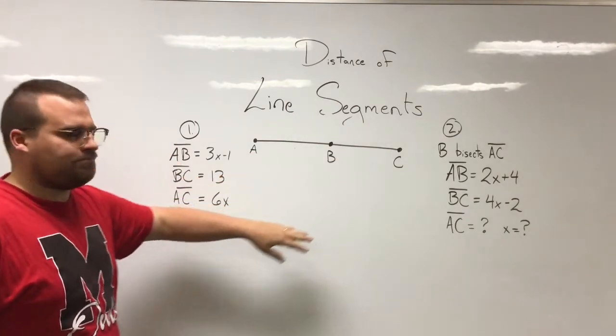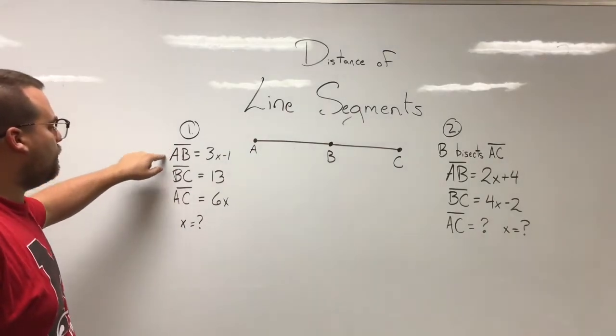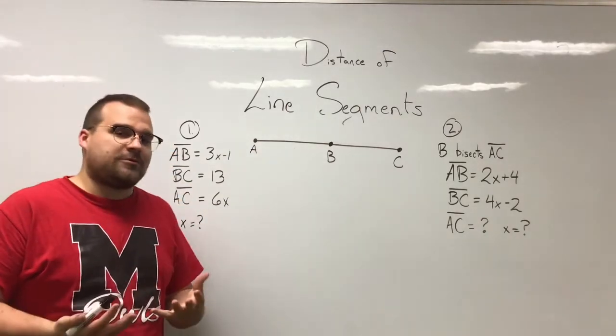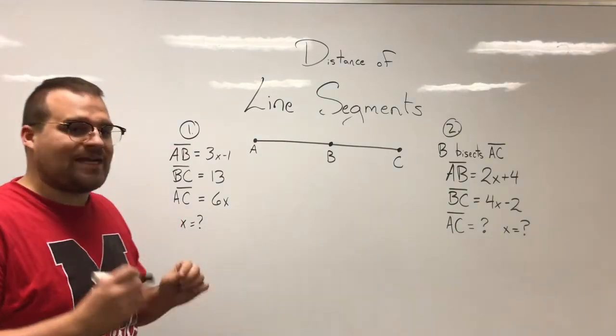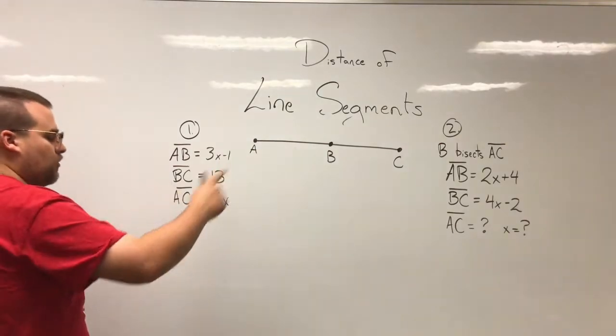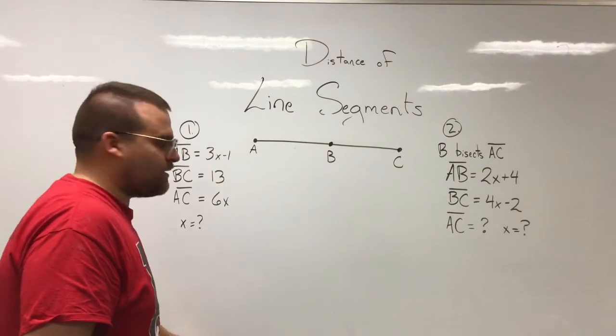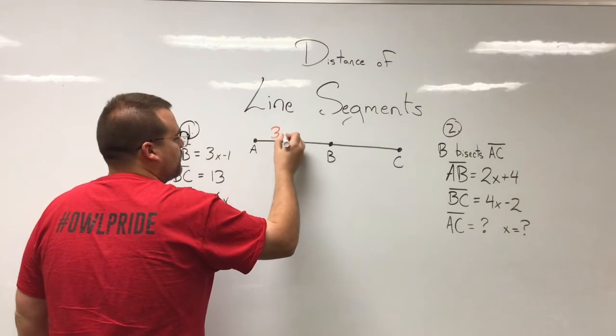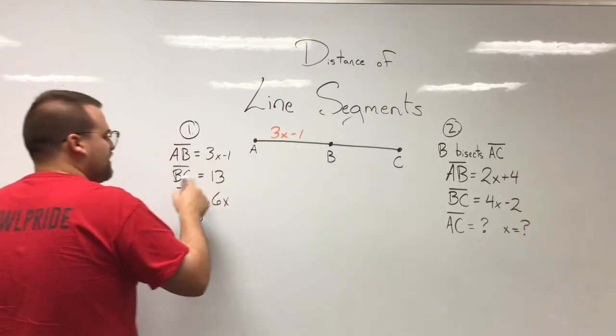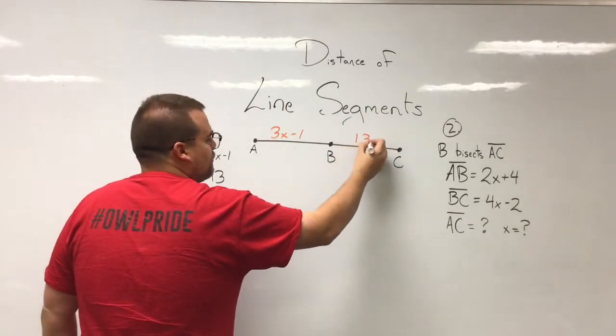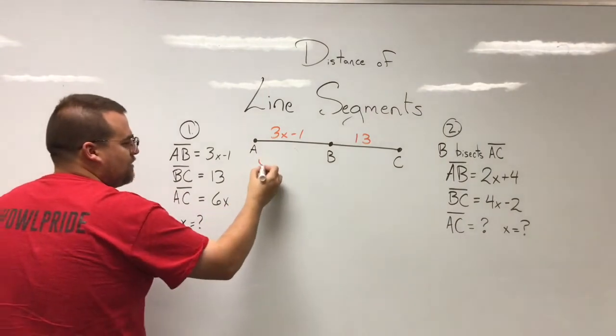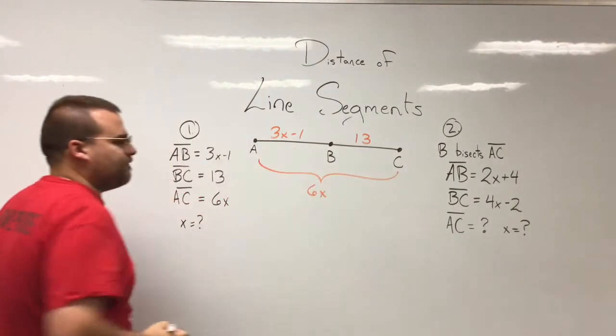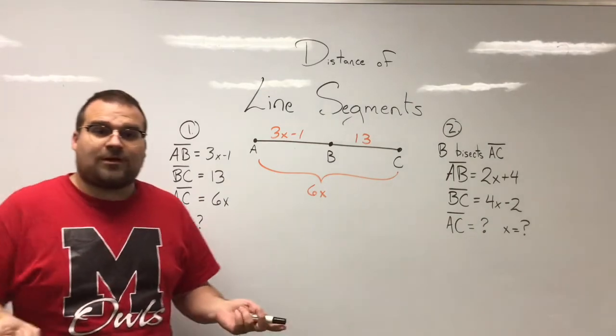We're going to do both of them on this line. Problem number one has a lot of given information, and the way I always like to start these is by writing down that given information or labeling it on my diagram. So I know AB is 3x minus 1, and I know BC is 13, and I know AC is 6x.